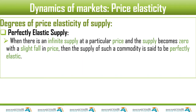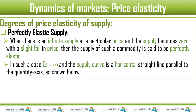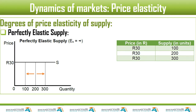The first case, which is an extreme case, is perfectly elastic supply. When there is an infinite supply at a particular price and the supply becomes zero with a slight fall in price, then the supply of such a commodity is said to be perfectly elastic. In such a case, the elasticity of supply — PES — is equal to infinity. The supply curve is a horizontal straight line, parallel to the quantity axis.